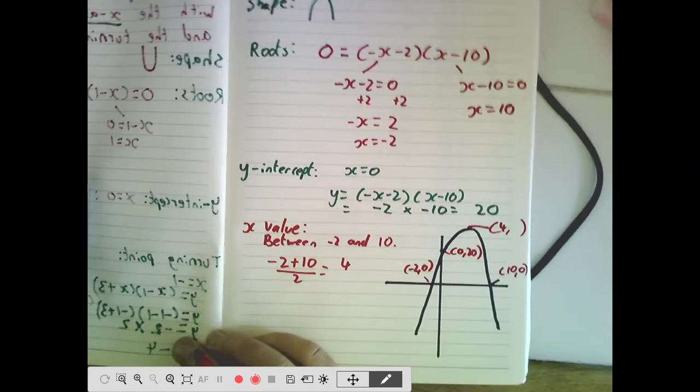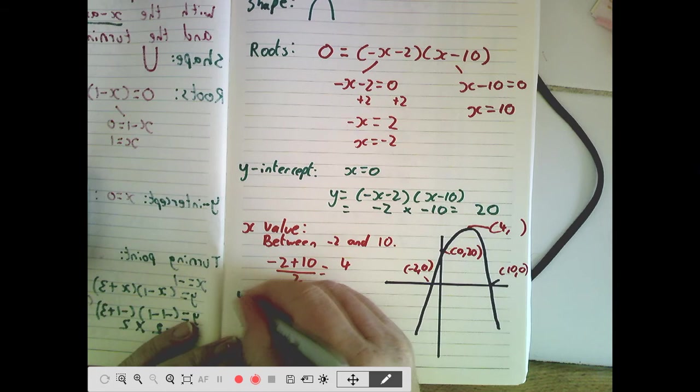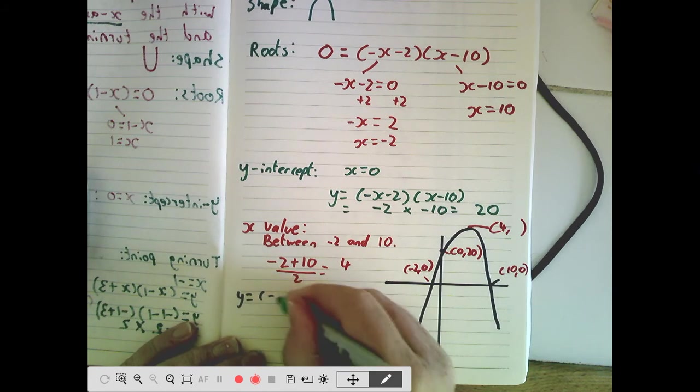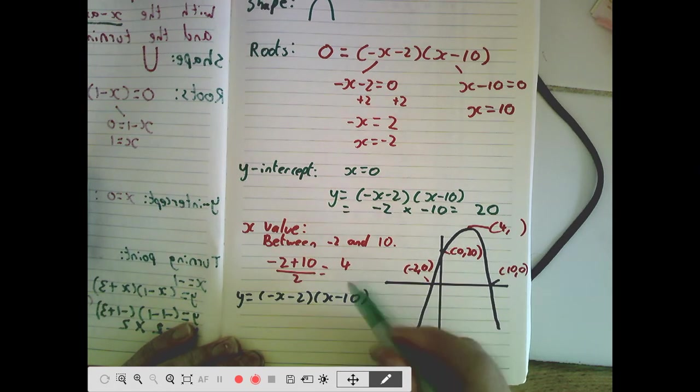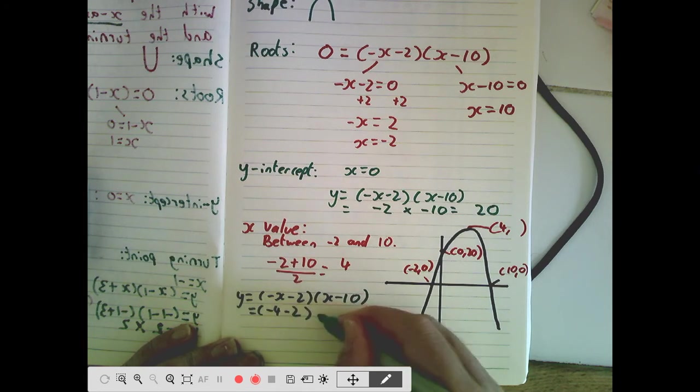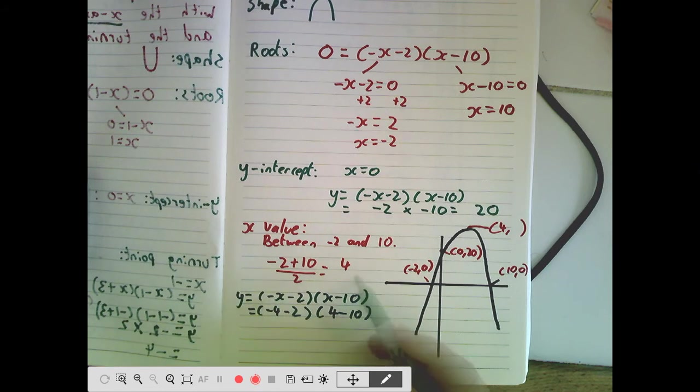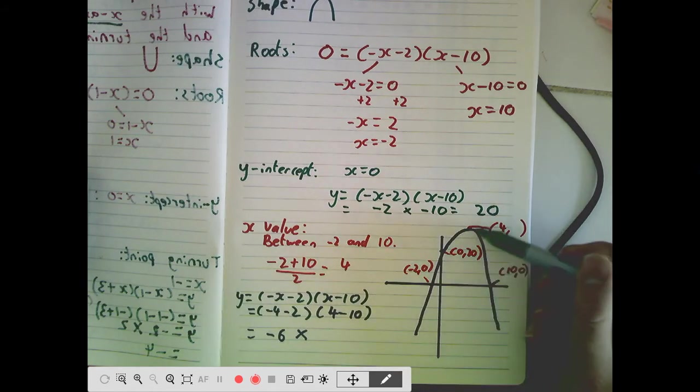And now what we can do is substitute that value into our equation. So we know that y equals minus x minus 2, x minus 10. That's just from the question. We're going to use the value of 4. Minus 4 minus 2, 4 minus 10. All I've done here is replace x with the 4. And we can work this out. So minus 4 take 2, it's going to be negative 6. We know it's going to be a positive answer.